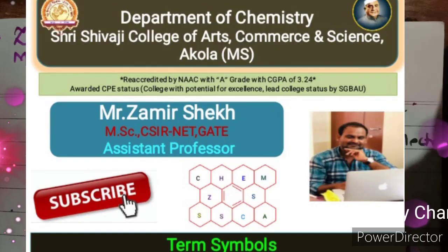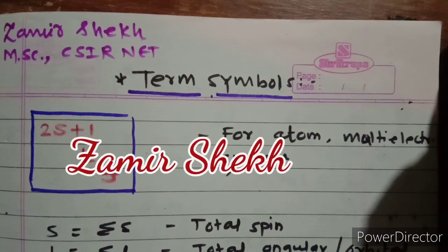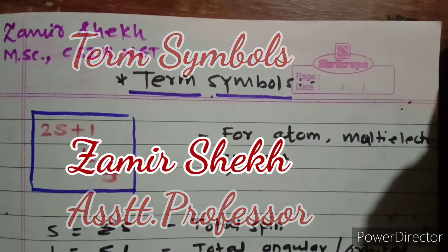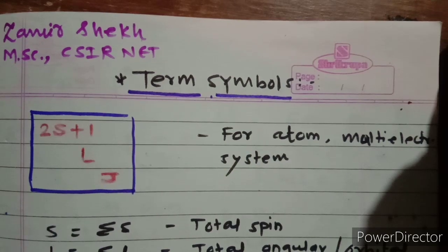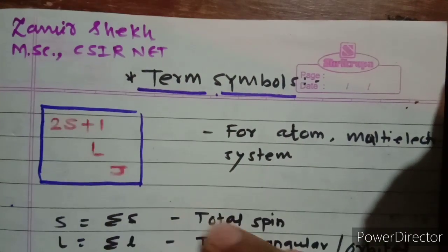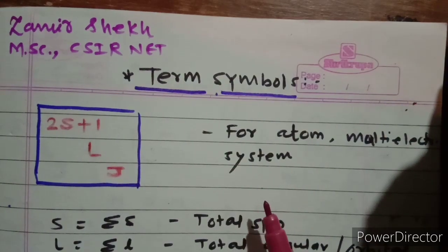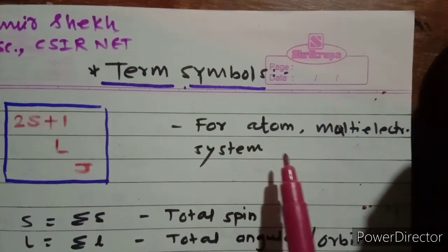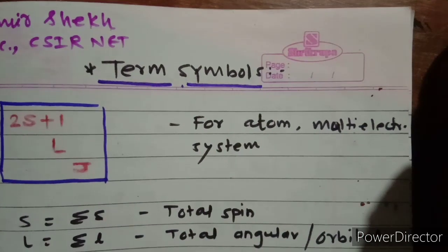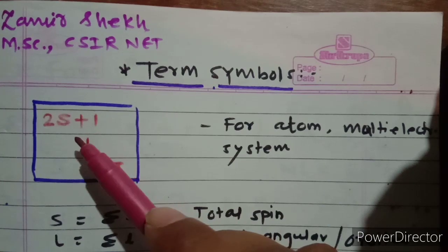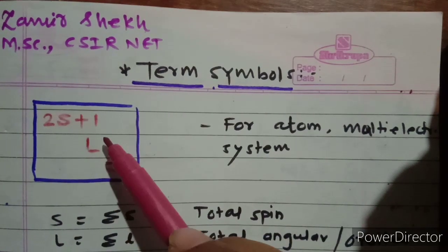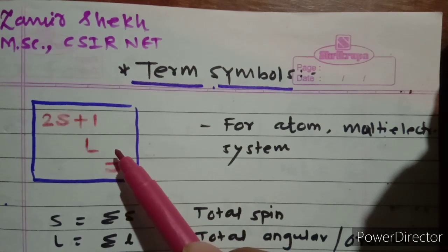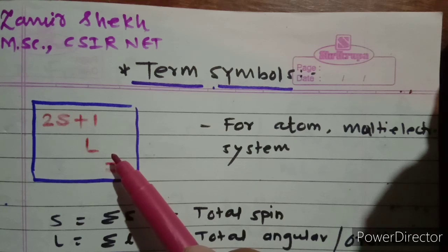Hello everyone, I am Zamir Sheikh. Today we will discuss the concept of term symbols in inorganic chemistry. A term symbol is a symbolic representation of the energy state for a free atom — for a single electron as well as for a multi-electron system. Term symbols are represented by the formula (2S+1)LJ, where 2S+1 is the spin multiplicity, S is the total spin, and capital L is the orbital quantum number starting from 0, 1, 2, 3, denoted as s, p, d, f.